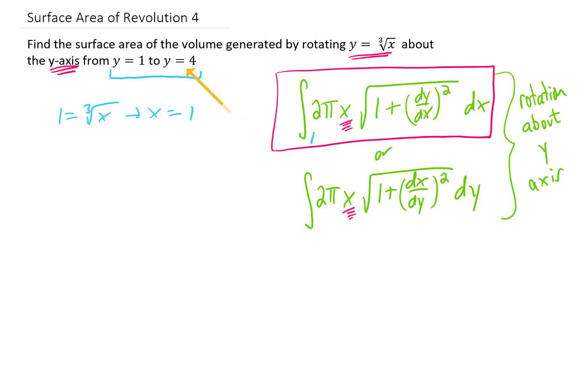If we plug y equals 4 into the original equation, we have 4 equals the cubed root of x. Cubing both sides is going to give us x equals 64, making 64 our upper limit of integration. Now, we know that y equals x to the 1 third power, and taking the derivative of y with respect to x gives us 1 third x to the negative 2 thirds power.